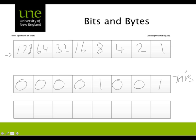Remember that we only have 7 bits to play with in ASCII, as our most significant bit — the 8th bit — is always set to 0. So given only 7 bits, the most we can represent in terms of characters is 1 plus 2 plus 4 plus 8 plus 16 plus 32 plus 64, which is 127.